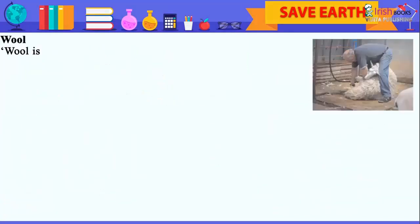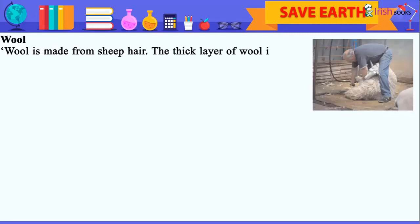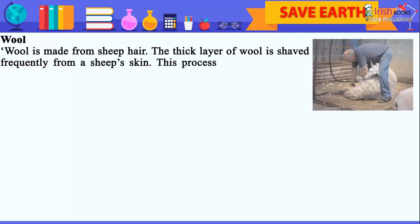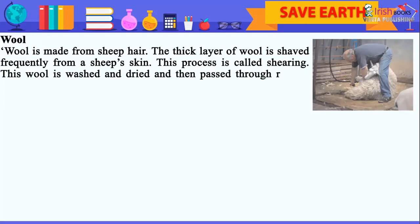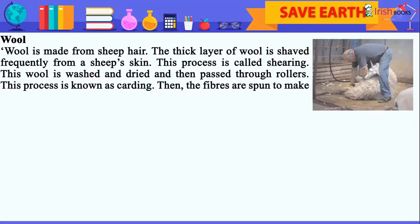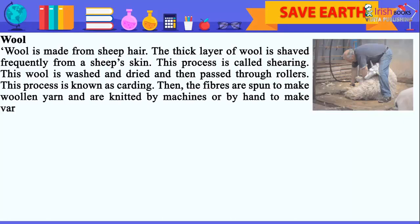Wool is made from sheep hair. The thick layer of wool is shaved frequently from a sheep's skin — this process is called shearing. This wool is washed and dried and then passed through rollers, a process known as carding. Then the fibers are spun to make woolen yarn and are knitted by machines or by hand to make various garments. Woolen garments are worn during winter.